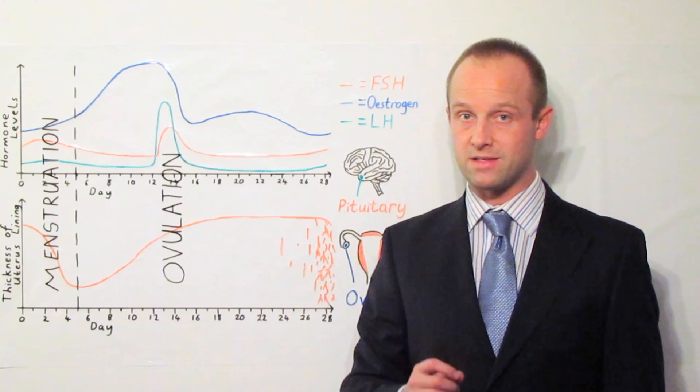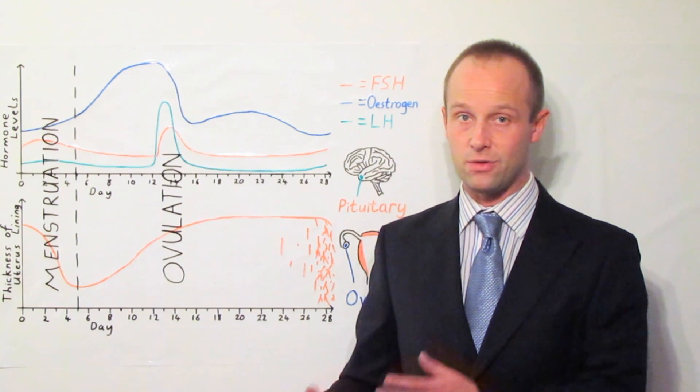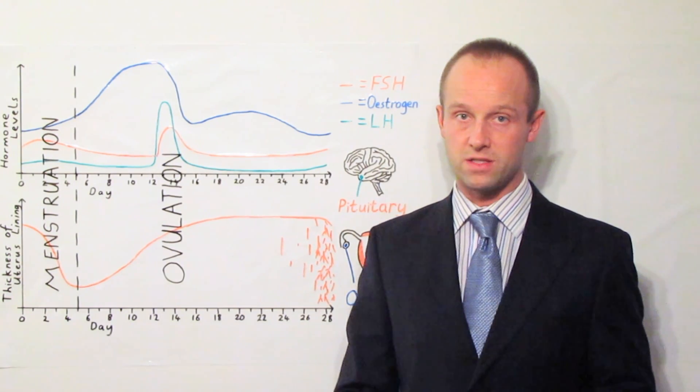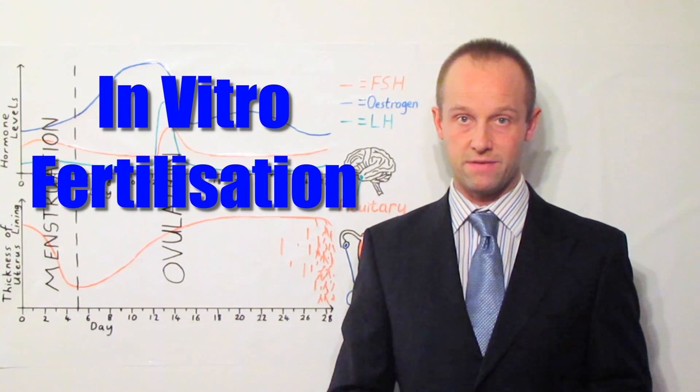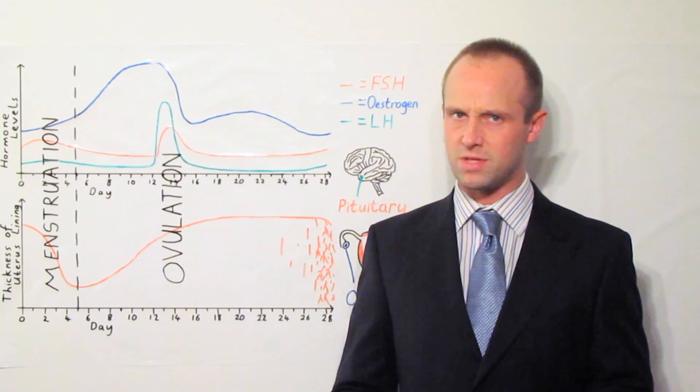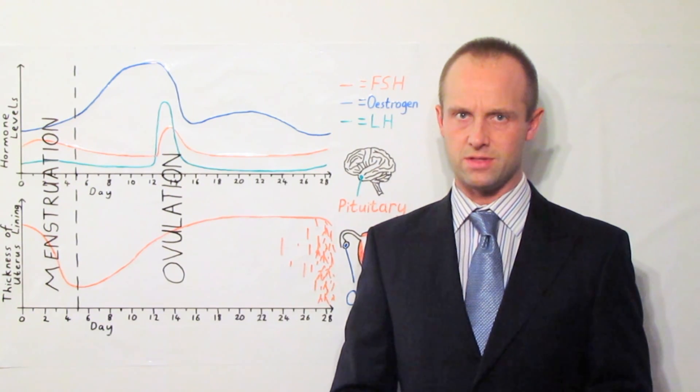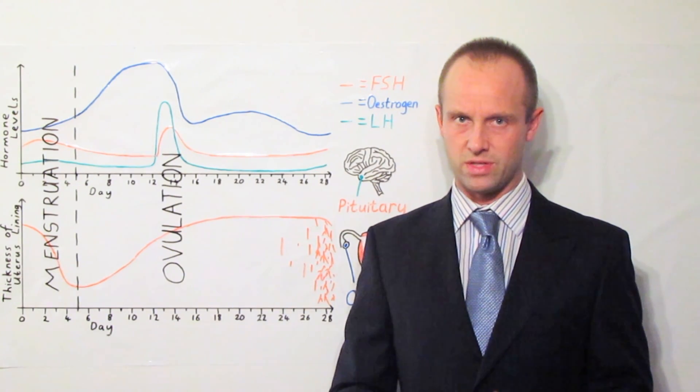But the eggs are then collected and they're fertilized outside of the human body. They're fertilized in a petri dish. It's known as in vitro fertilization or IVF treatment. Sometimes it's also referred to as test tube babies although it's actually a petri dish which it takes place in.